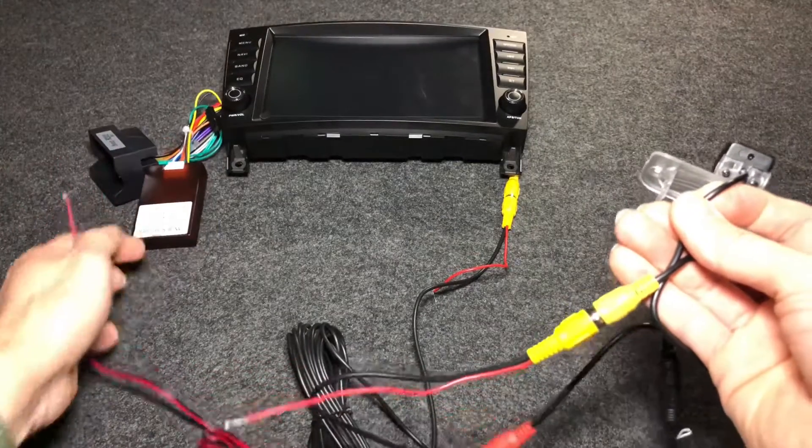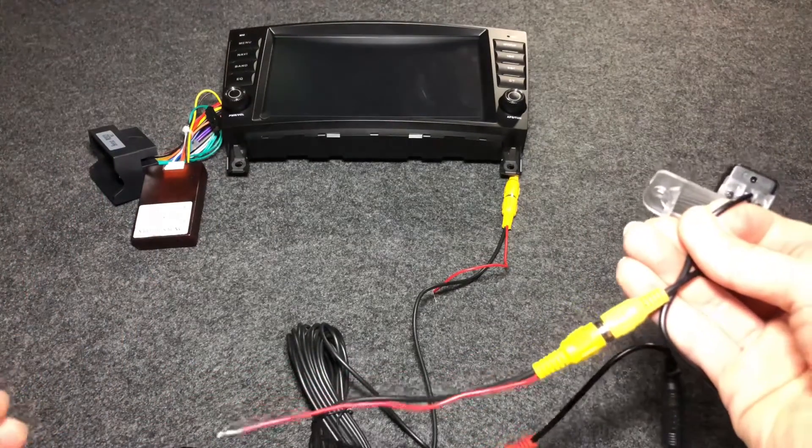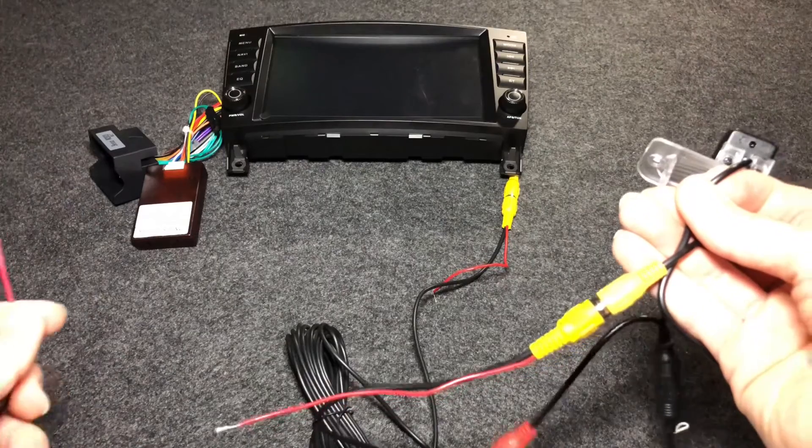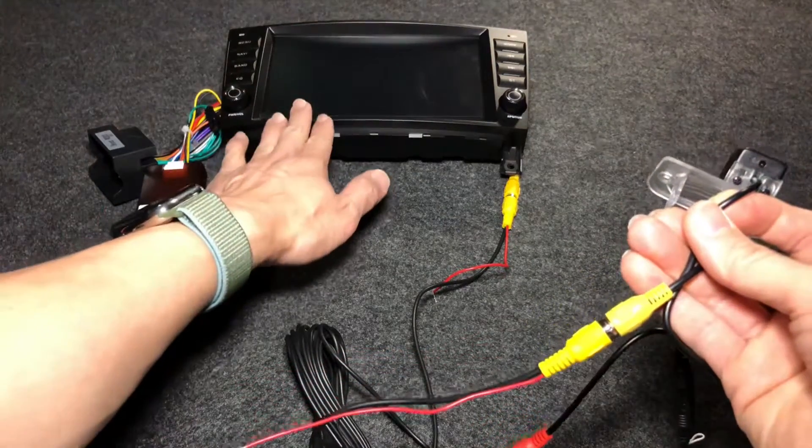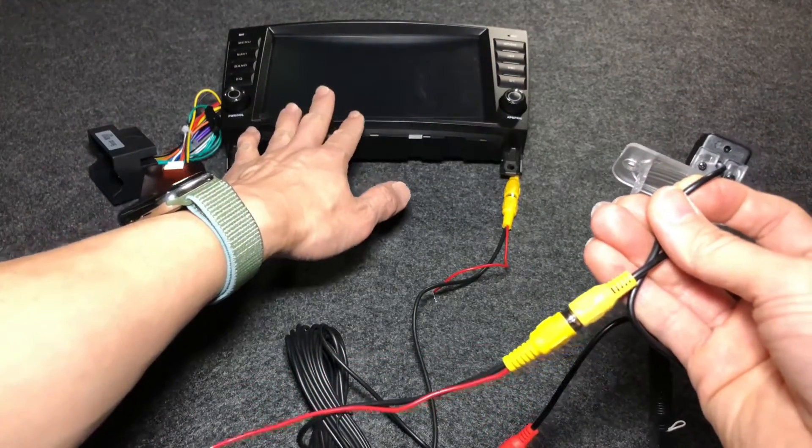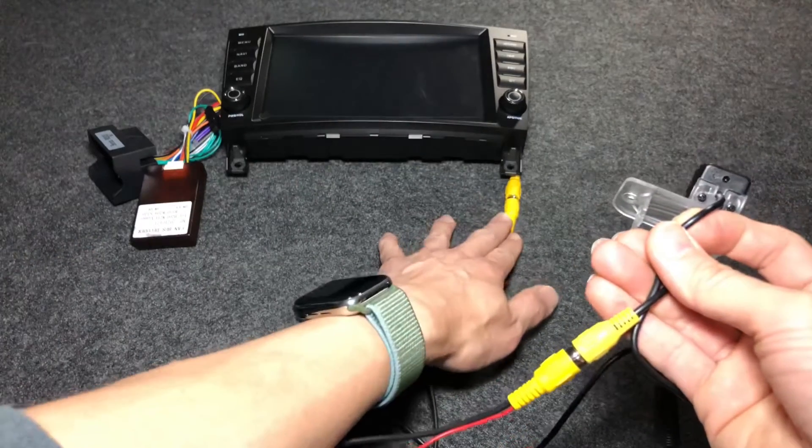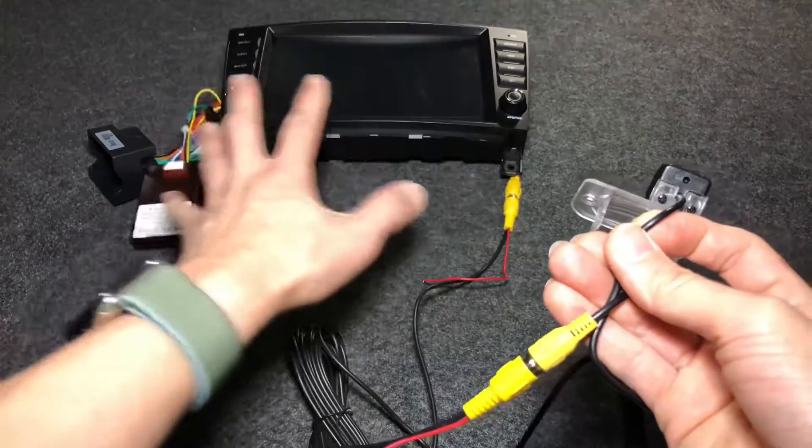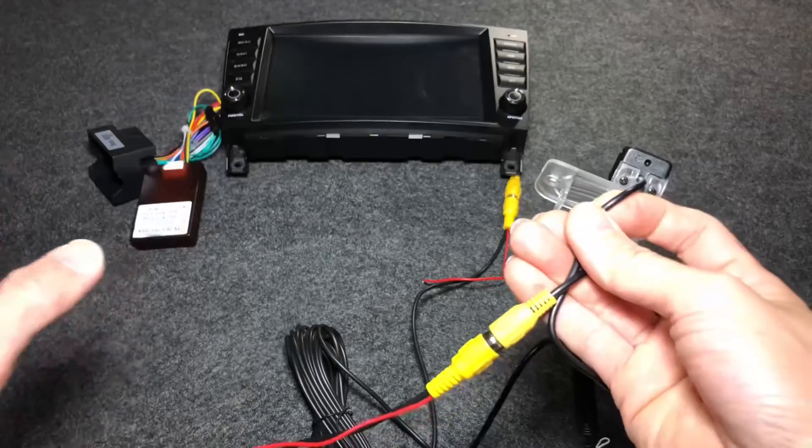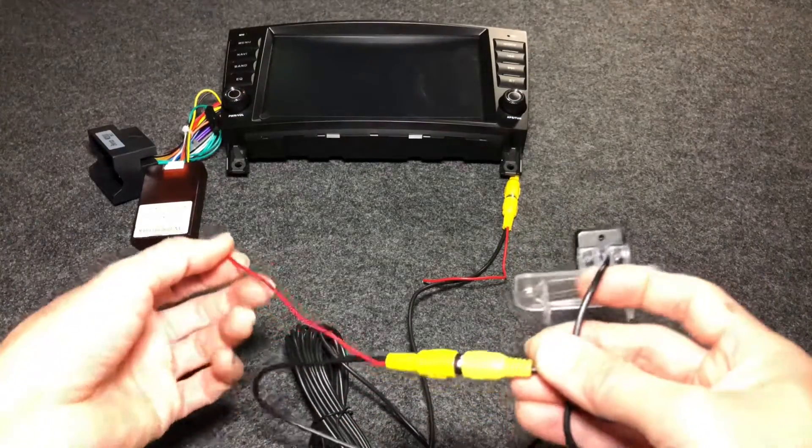This particular head unit doesn't have a 12 volt trigger when you put it on reverse, but when you put it on reverse, the head unit switches to the video input - the reverse camera video input. So it does have a way to tell that the gear is in reverse.